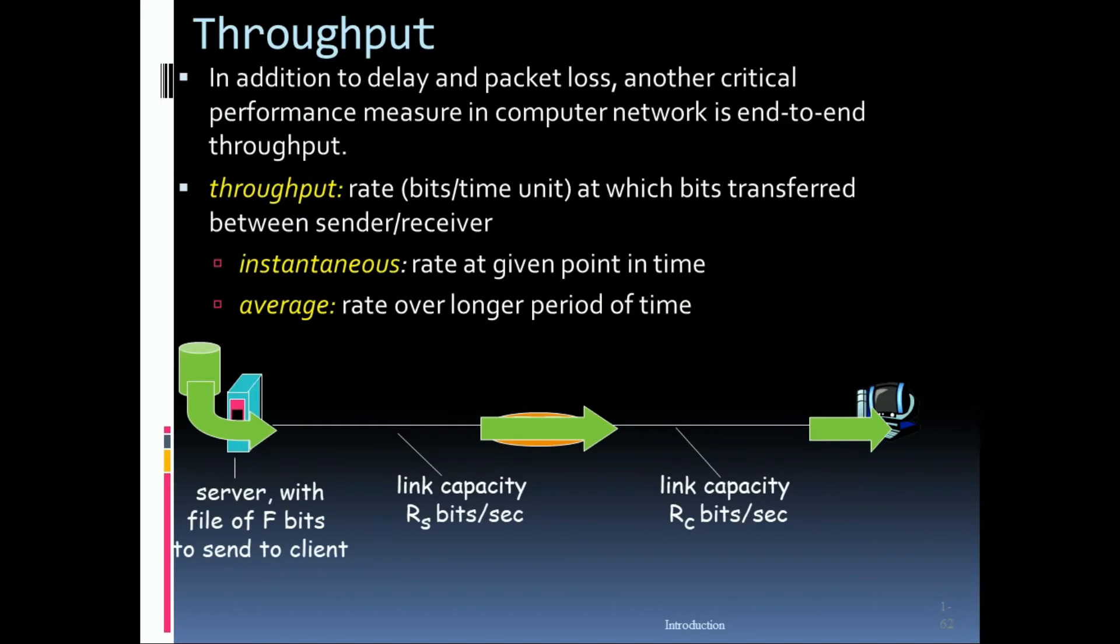So what is throughput? In addition to delay and packet loss, another critical performance measure in computer networks is end-to-end throughput. Throughput rate is at which bits are transferred between sender and receiver. Instantaneous rate at a given point in time and average rate over longer period of time.